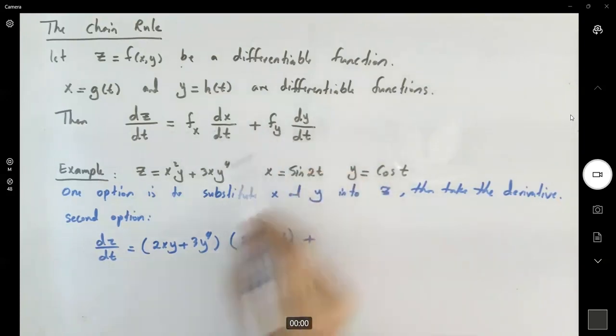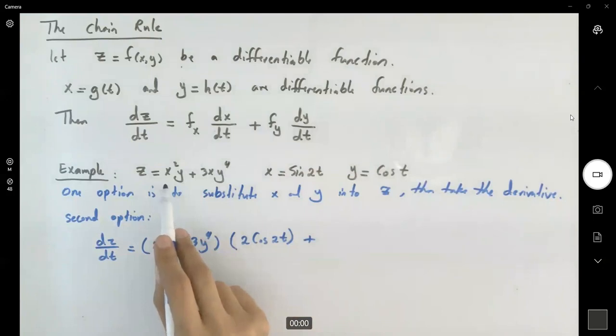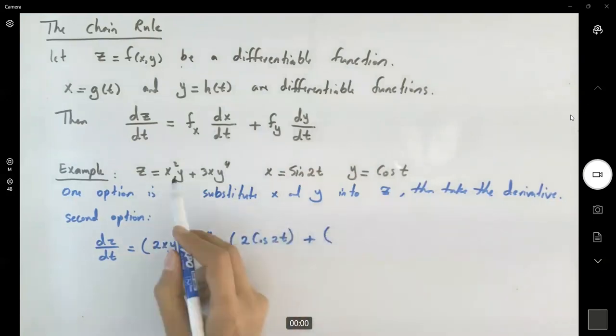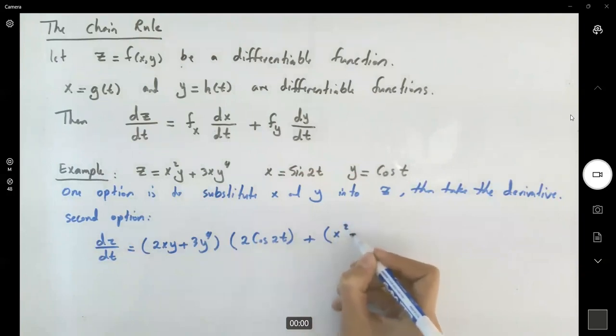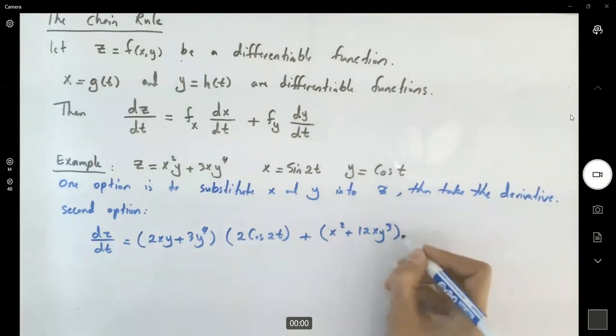Plus, now f of y, the partial derivative of f with respect to y, which means x is a constant. So you get x² plus 12xy³ times dy/dt. Now we are taking the derivative of y with respect to t, which is negative sin(t).